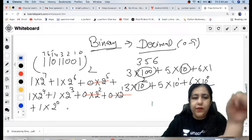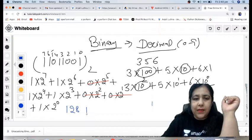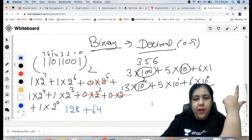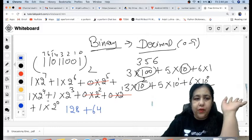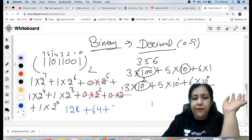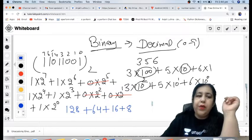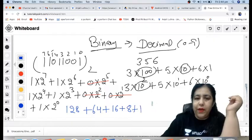It is 128 plus 2 raised to the power 6 is 64, 2 raised to the power 5 is 32, it is 0. Then 2 raised to the power 4 which is 16, plus 2 raised to the power 3 that is 8, this is 0. 2 raised to the power 0 is 1, so 1 into 1 is 1, so plus 1.